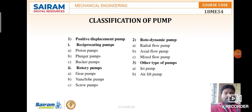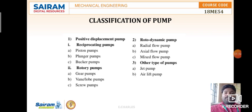The first classification is the positive displacement pump. Any pump can be a positive displacement pump, rotodynamic pump, or other type. Positive displacement pumps are called reciprocating pumps because they have a to-and-fro motion. An example is the reciprocating pump, which has a piston-cylinder arrangement moving forward and backward — similar to IC engines. Examples include piston pumps, plunger pumps, and bucket pumps.